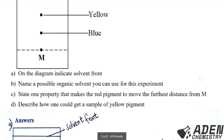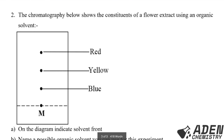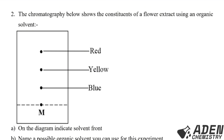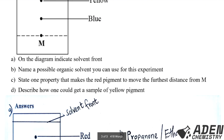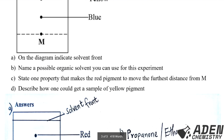Question two: the chromatogram shows the constituents of a flower extract using an organic solvent. Part A: indicate the solvent front on the diagram. The solvent front is the farthest point where the solvent spreads out. Part B: name a possible organic solvent you can use for this experiment — propanone or ethanol.